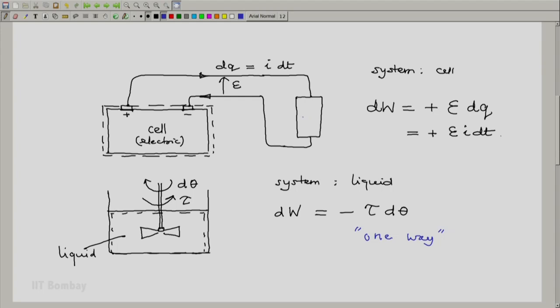Whereas I can connect this to a charger to charge it. In which case the current will be in the opposite direction, but the direction of the potential will remain the same. So DQ will be negative, E will be positive. So work done by the system will be negative.